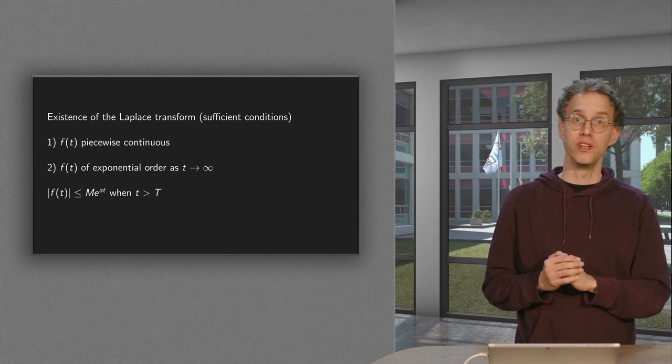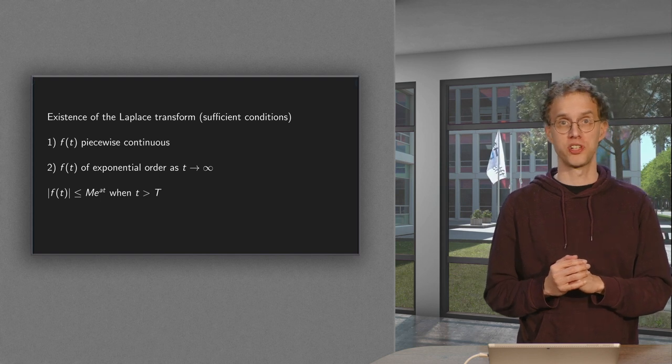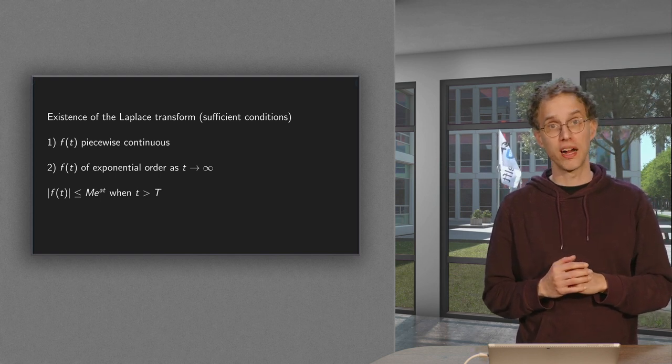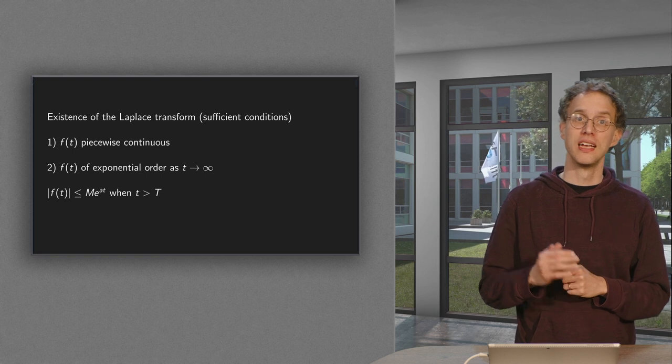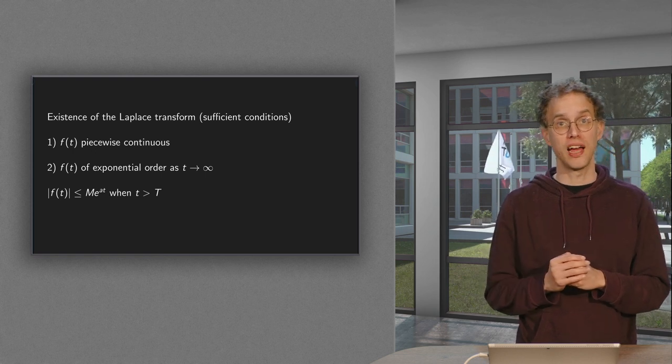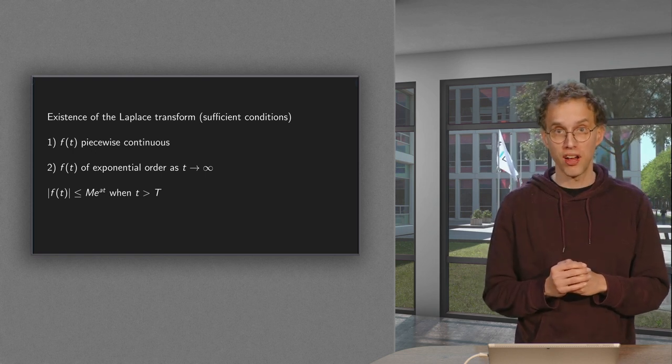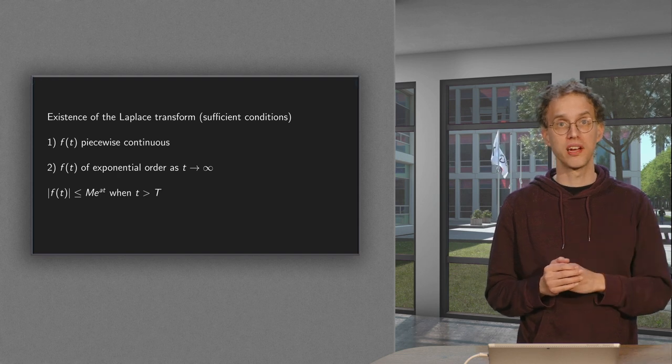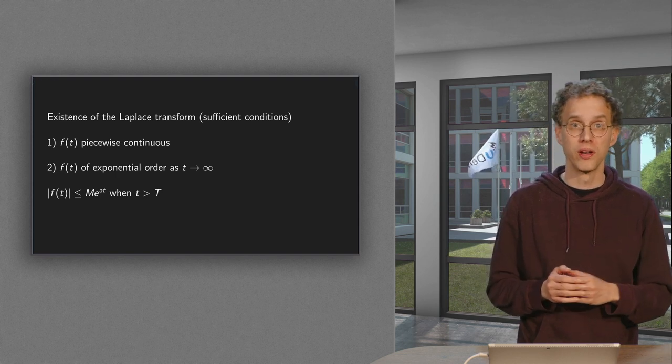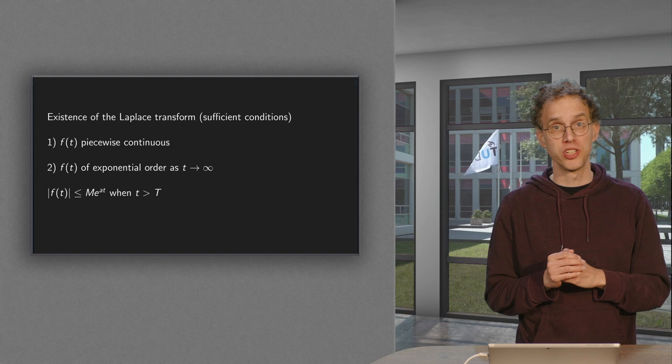First of all, we do not want vertical asymptotes. For this we require piecewise continuity of f. And secondly, we want f to go to zero fast enough. And for this we require exponential order. Note that these two conditions are sufficient.